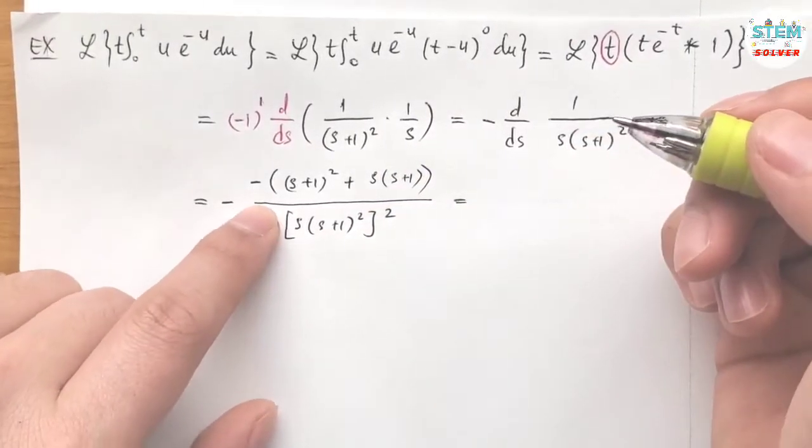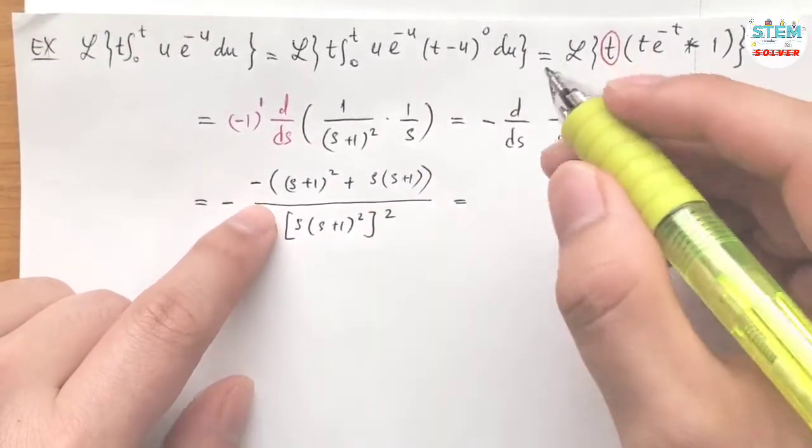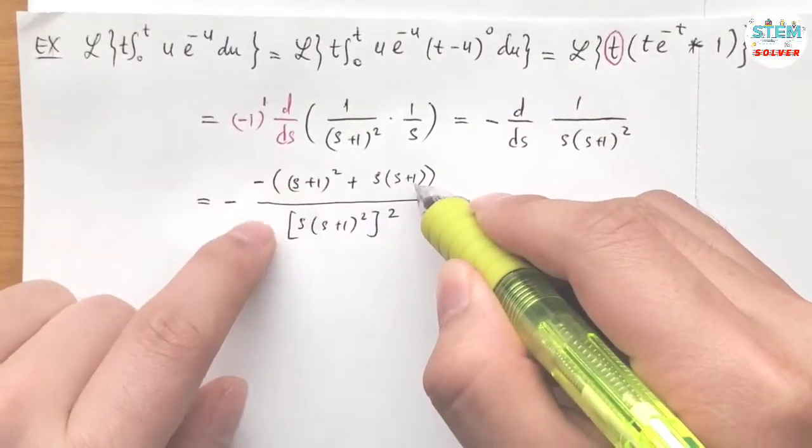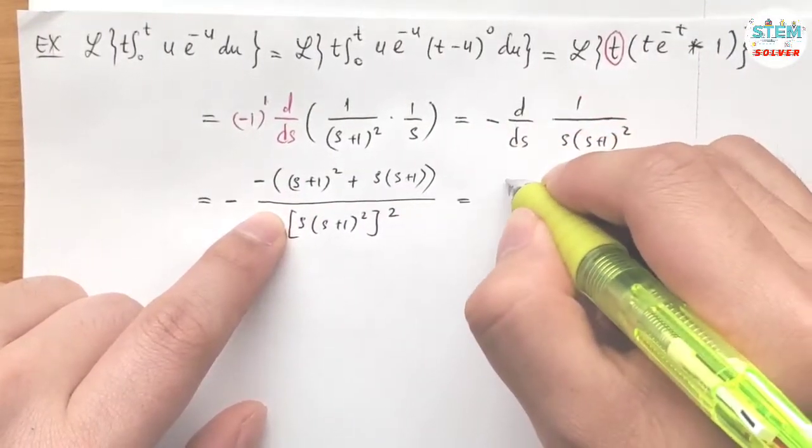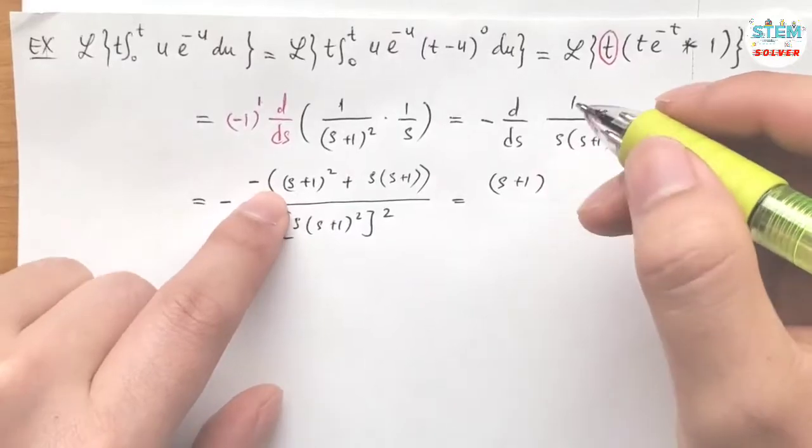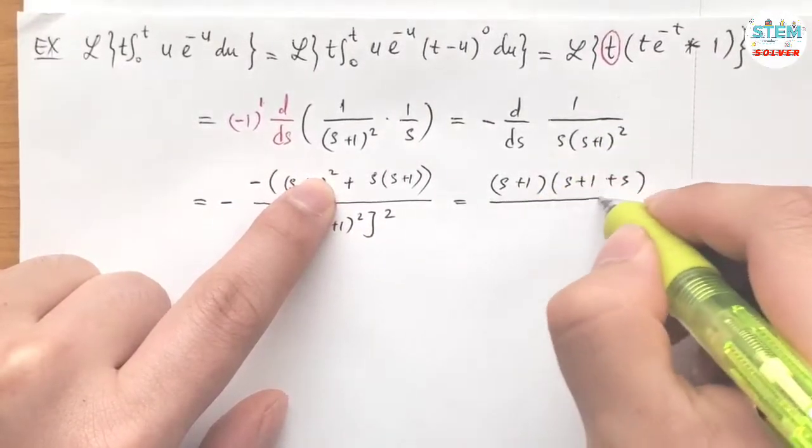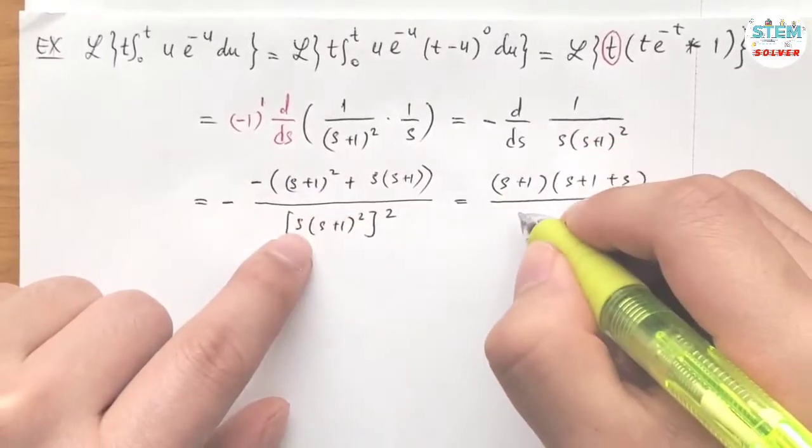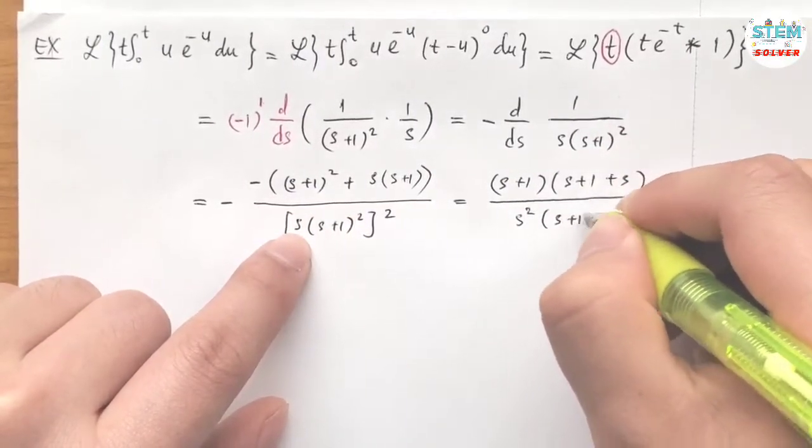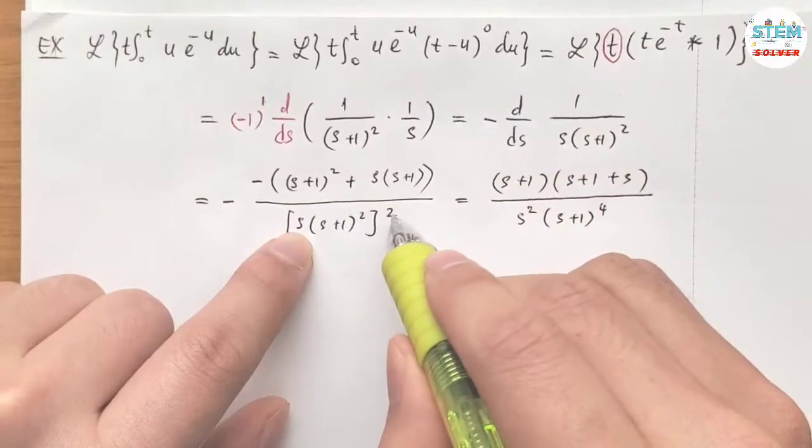Now simplify it. So I have negative negative positive. s plus 1, s plus 1 in common. So I'm going to factor that out. And what I have left is s plus 1 plus s, all over—I'm going to distribute this out. So I have s squared times s plus 1 to the fourth. So 2 times 2 is 4.